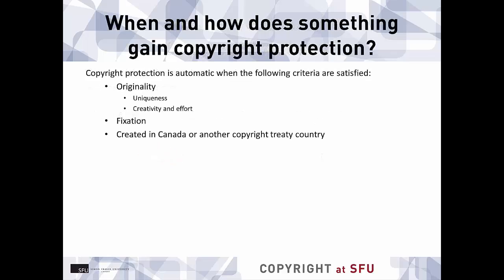In Canada, copyright protection happens automatically as soon as a work is created, as long as it satisfies these criteria. It must be original — meaning not simply a copy of something else and also displaying at least a minimal amount of creative and intellectual endeavor. It must be fixed in physical form, whether digital or analog. And it must have been created in Canada or another country that is a signatory to an international copyright treaty such as the Berne Convention. These treaties include most countries in the world and ensure that a work created in Canada will be protected in those other countries under a reciprocal agreement.